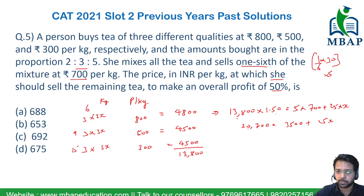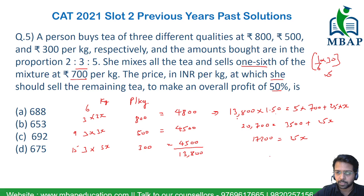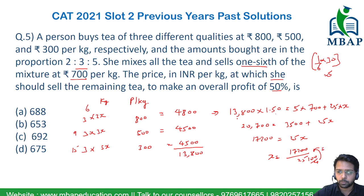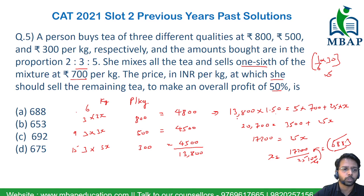Subtracting 3,500 from 20,700 gives 17,200. So 17,200 = 25x, and the value of x = 17,200 ÷ 25 = 688. So the closest answer is approximately 688 rupees per kg.